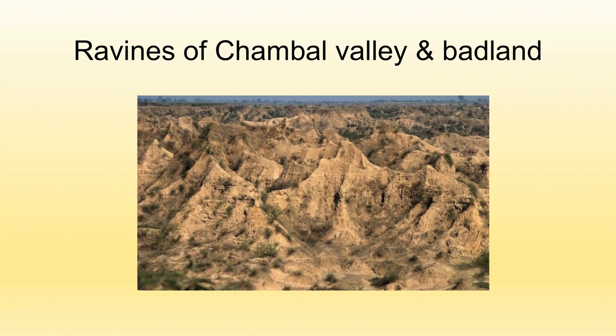In the Chambal Valley, deep furrows and many undulations are found in the top soil layer — it becomes very much dissected. So many ups and downs are present that it is not level land, making it very unsuitable for cultivation or agriculture. Fertility is also lost, and nothing can be grown on that land.